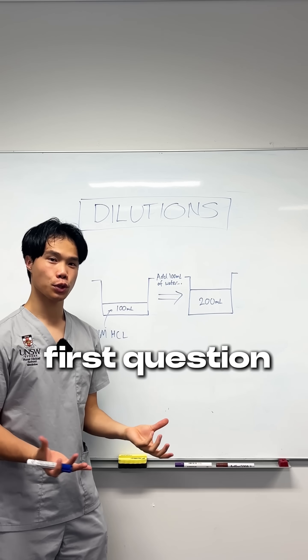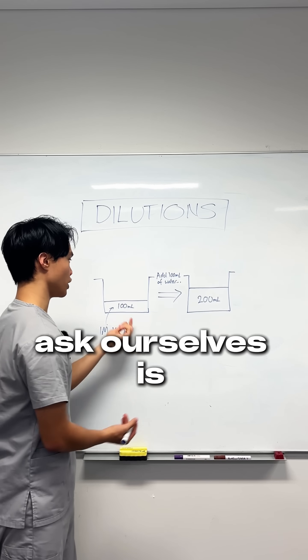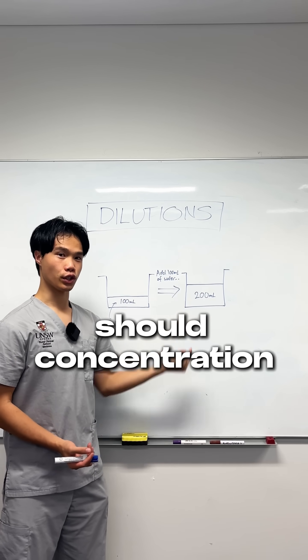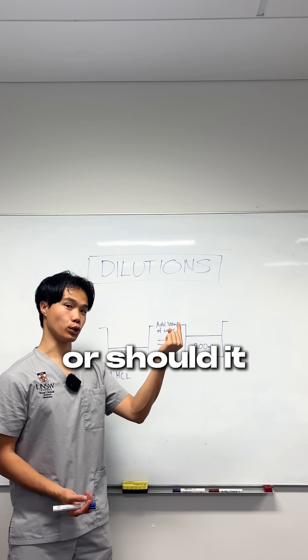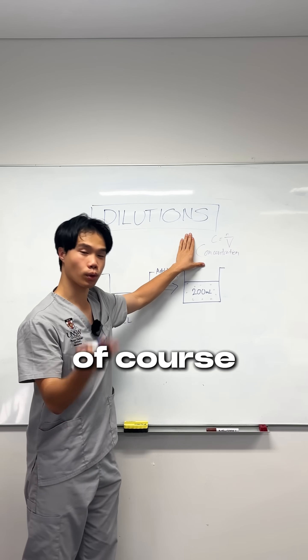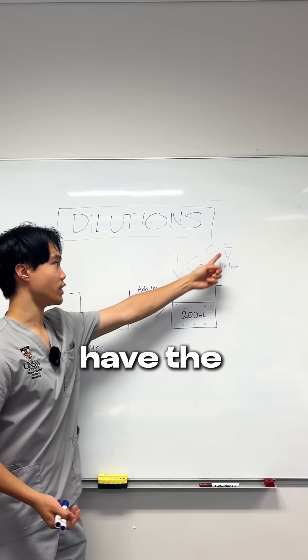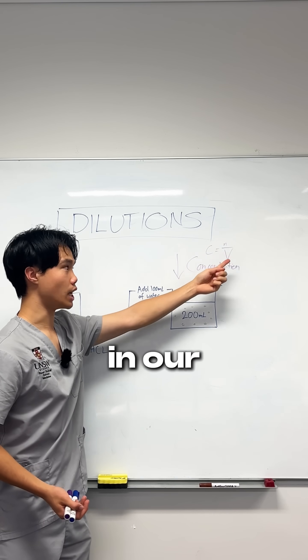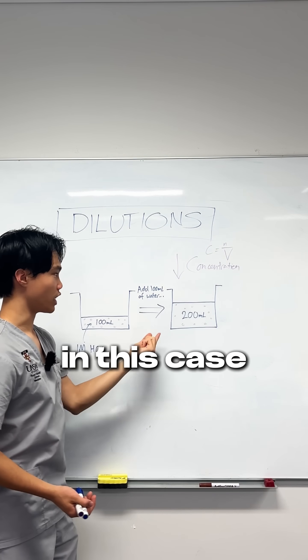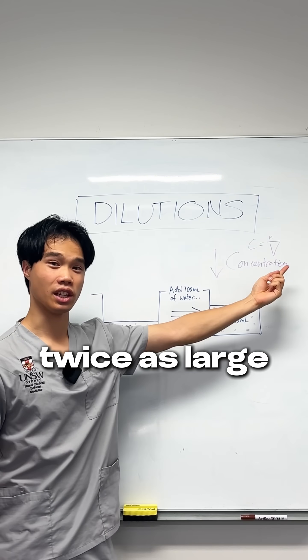So the first question we have to ask ourselves is: when we dilute, should concentration go up or should it go down? Of course it should go down, because you have the same amount of stuff and now a volume that is twice as large.